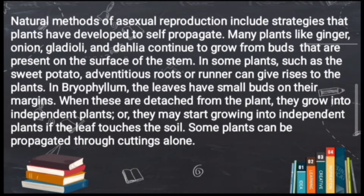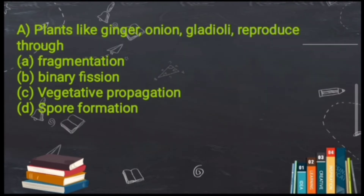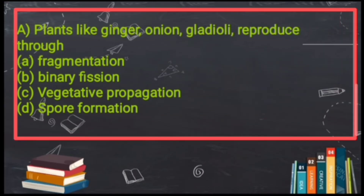After reading the passage, now we attempt the questions. First question: Plants like ginger, onion, and gladioli reproduce through — (A) fragmentation, (B) binary fission, (C) vegetative propagation, (D) spore formation. This is a multiple choice type question.